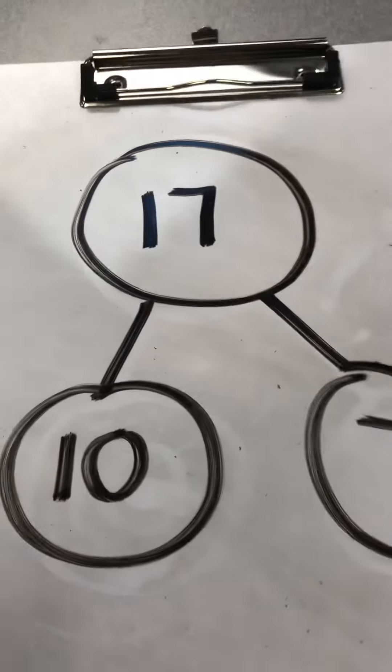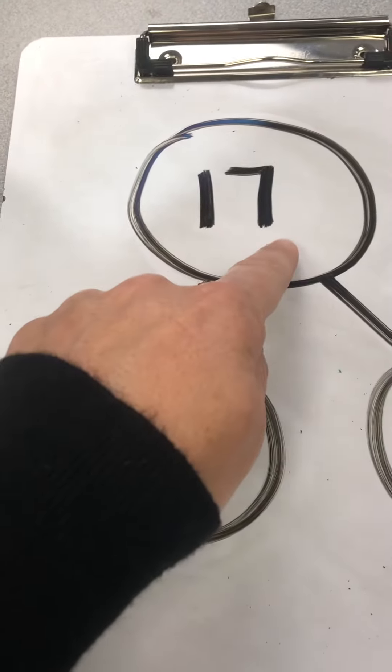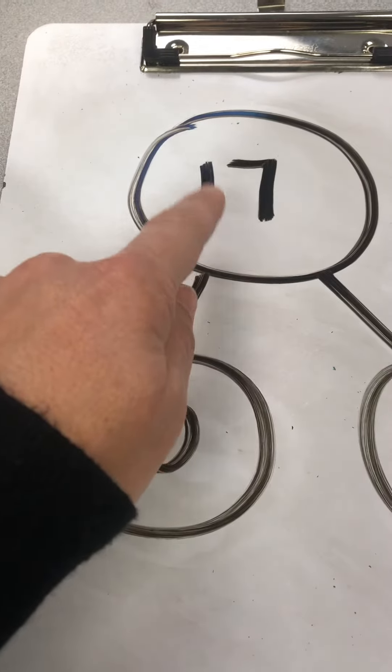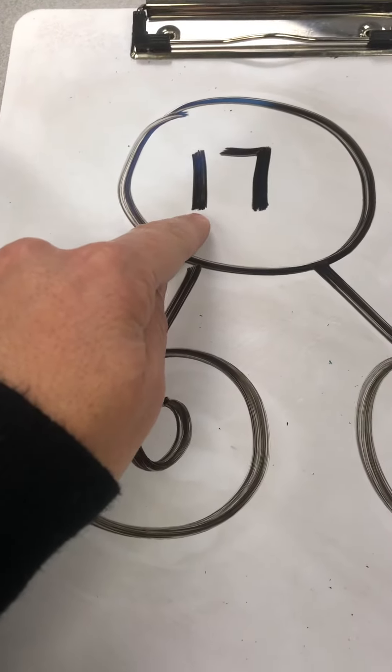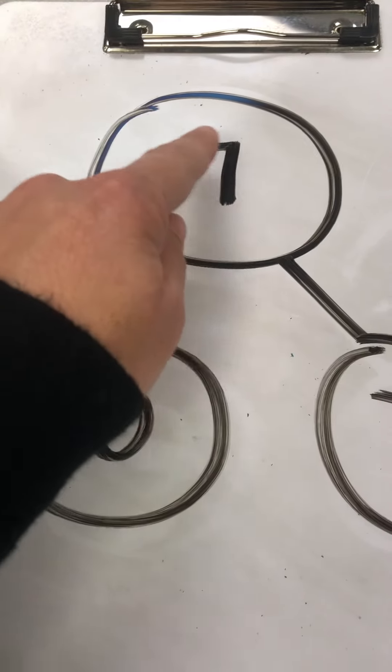So this is what number 17 looks like. It's a 1 and a 7. The 1 does not mean 1. The 1 means one group of 10, because it's in the tens place. And the 7 means 7 ones.